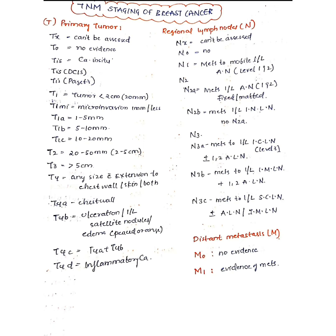To understand staging, you need to know breast lymphatics. Lymph nodes are divided into levels in relation to the pectoralis minor muscle. Level 1 nodes are lateral and below the pectoralis minor, including the anterior, posterior, and lateral axillary groups. Level 2 nodes are behind the pectoralis minor, including the central and Rotter's (interpectoral) groups. Level 3 nodes are medial and above the pectoralis minor, including the apical group.